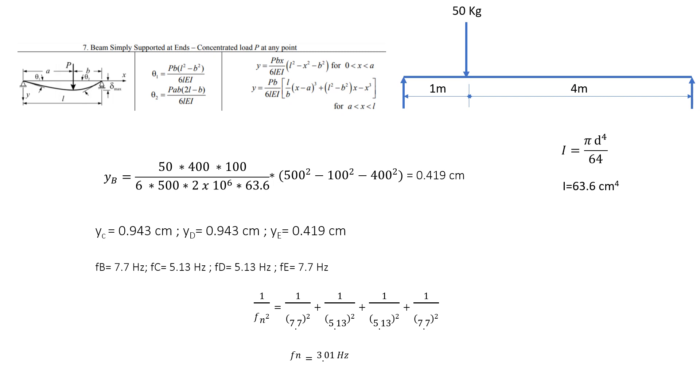So times (500² - 100² - 400²) equals 0.419 cm. This is the deflection at point B when only this point load is acting.